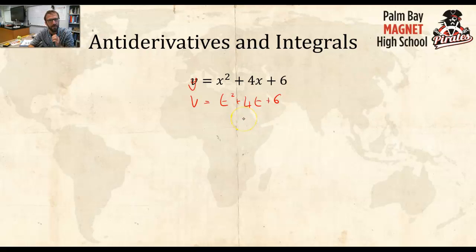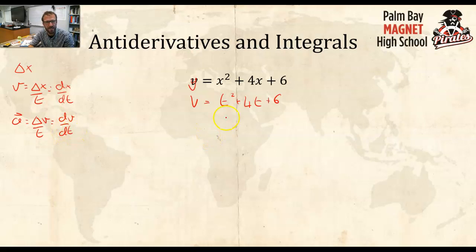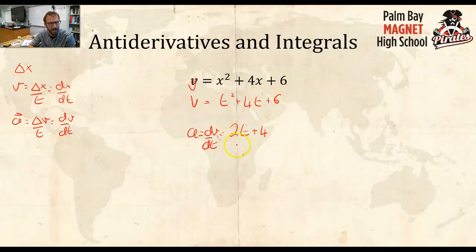This is a velocity function. We can get a lot of information from this. If you remember, velocity is equal to displacement over time, or in calculus talk, it's dx/dt. Acceleration is equal to the change in velocity over time, which in calculus talk is dv/dt. So if I want to get the acceleration, I can take the derivative. The acceleration equals dv/dt, which is 2t plus 4, because the 2 goes out front, the exponent reduces by 1, and the constant 4 becomes just 4 times 1. I have an acceleration function.